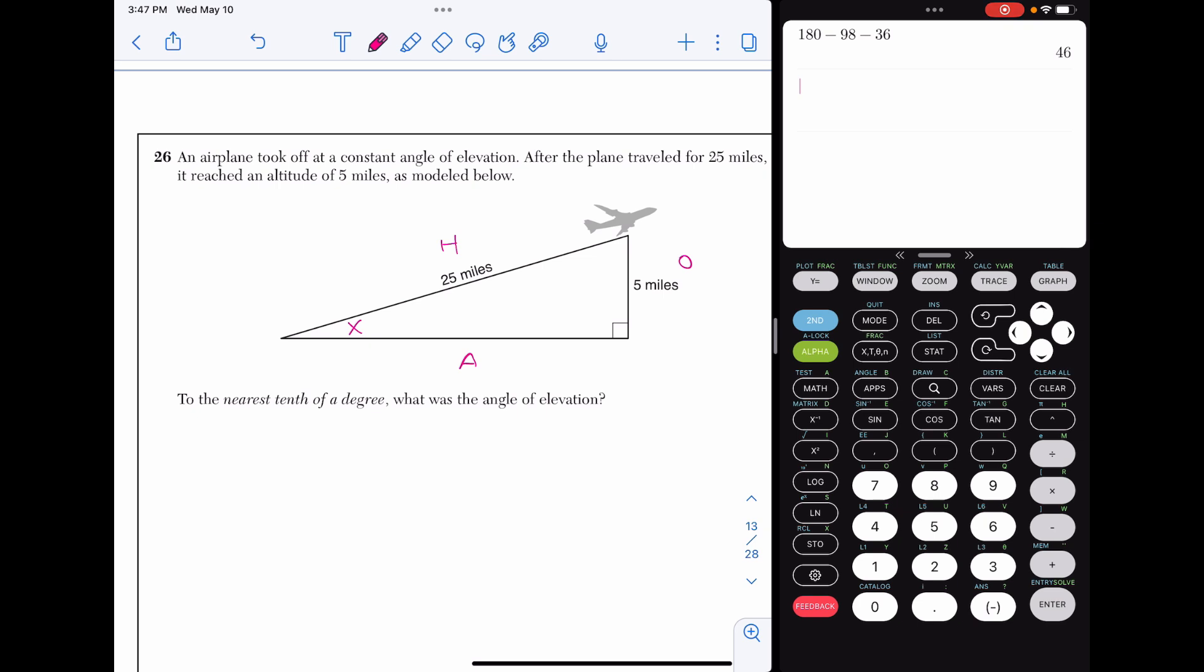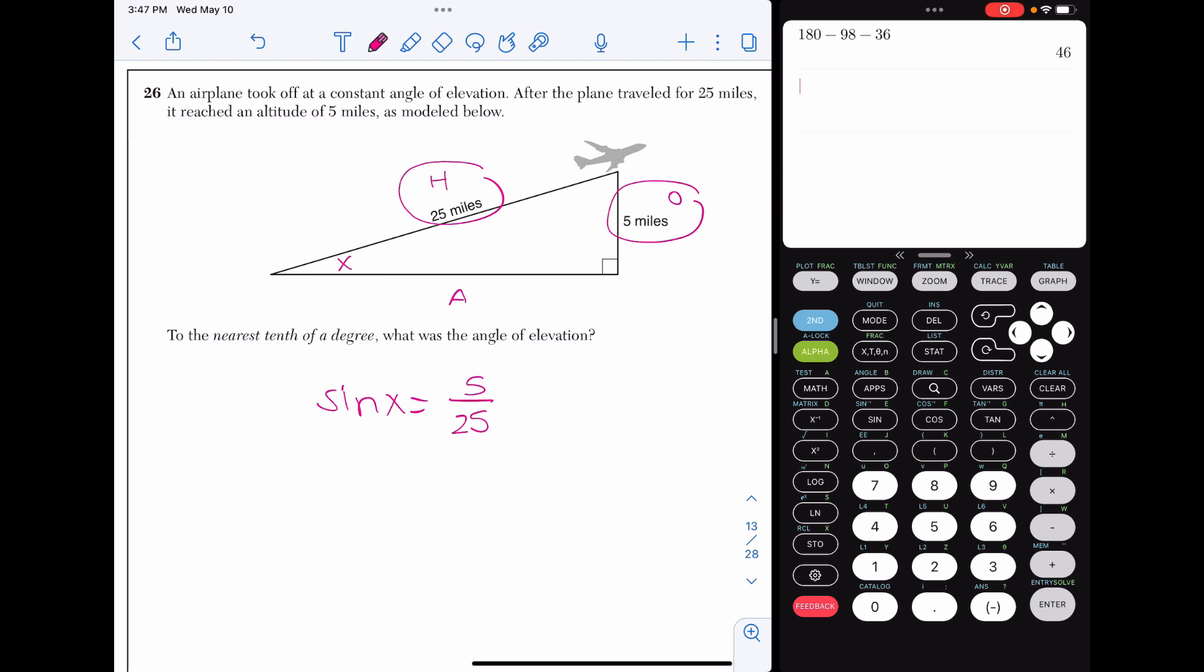This is going to be a problem that uses sine because the opposite side has something written on it and the hypotenuse side has something written on it. So the sine of X is equal to five over 25. When you're solving for an angle, this is an inverse operation. So we are going to use the inverse button in our calculator. So I'm going to hit the second button, then sine, five over 25. And we are going to now round this to the nearest tenth of a degree. So 11.5 degrees.